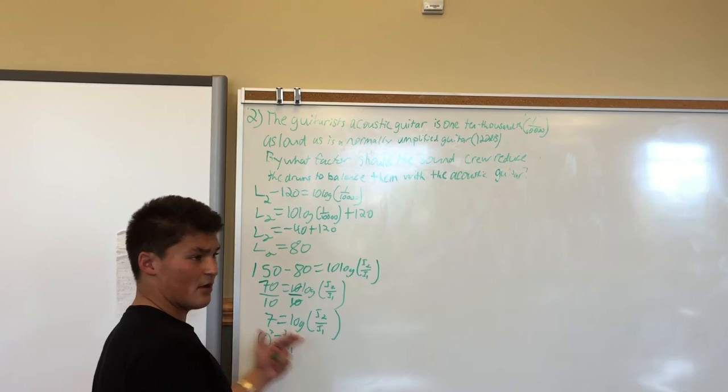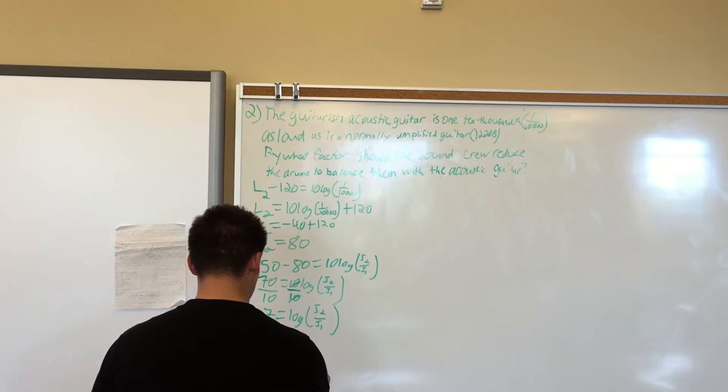We plug that into our calculator, and we do 10 to the power of 7, which is 10 million. So I2 over I1 equals 10 million.